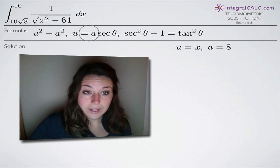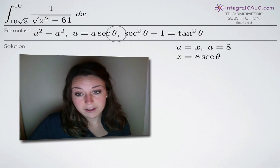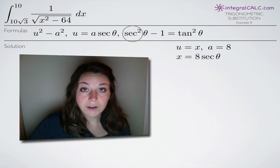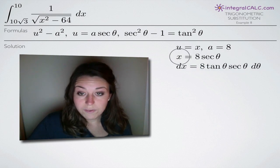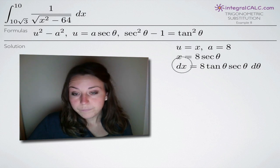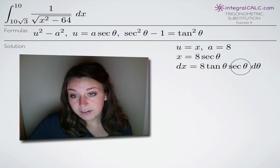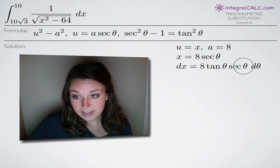Now we can plug u and a into the second part of our formula, and we'll get x equals 8 sec of theta. We'll leave the third part alone for now and come back to it later. The very next thing we're going to do is take the derivative of this equation, so we'll get dx equal to 8 tangent of theta sec of theta — that's just by the formula, since the derivative of sec(θ) is tan(θ)·sec(θ).